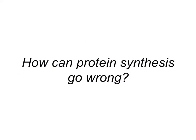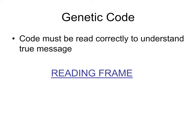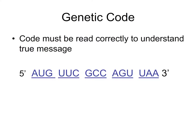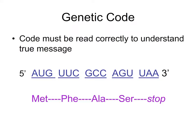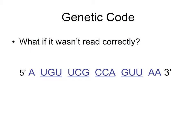Even though transcription and translation are very accurate, mistakes do happen. It is important to understand that codons must be in the proper reading frame to be read correctly. Take this DNA template strand — when properly transcribed, we get methionine, phenylalanine, alanine, and serine. But if transcription began at the wrong place, say one nucleotide off, that would change the reading frame. The codons would be composed of a different triplet of nucleotides, and the wrong amino acids would be translated.